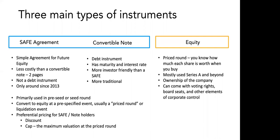That's SAFE agreements and convertible notes — they're the earliest stage instruments that people put into a startup. The other side is equity, which means they're actually buying a piece of your company. When you're raising on a SAFE note or a convertible note, you still own the entirety of your company. But when you sell equity, you're selling ownership of your company. At the point of selling equity, you have to know how much each share is worth, and it's mostly used in Series A or beyond. Equity typically comes with voting rights, board seats, or other elements of corporate control and governance.